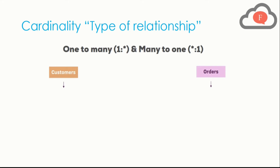The first and foremost type of relationship in cardinality is one-to-many and many-to-one. That means creating one relationship to many, and creating many relationships to one. It can be complex to understand in the abstract, so let me explain through an example.